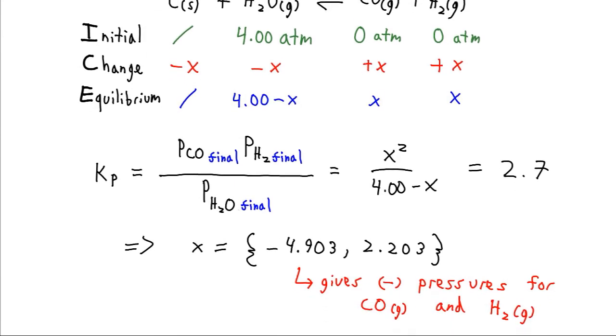So we get two values for x. And note that if we plug this negative 4.9 value in up here, that would give us negative concentrations over on the right side. And we also don't really expect to generate more than 4 atmospheres of H2O gas, since all of our starting reactant was this, and we didn't have anything on the right side. So this is the only value that makes sense, the positive 2.2.